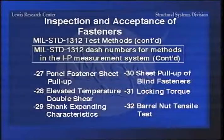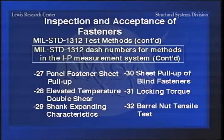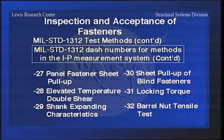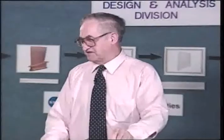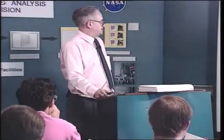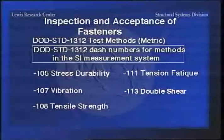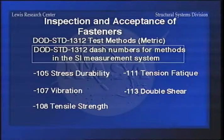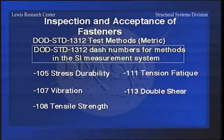That one would be for the blind fasteners. Then you have locking torque tests. The last one - barrel nut tension tests - I'm not sure whether the final copy is even in the book yet, but the last committee meeting we had it was discussed that that one was being published. Now for the metric side, you have these that are covered, and they changed it to a DOD standard 1312 for the metric in order to differentiate from the MIL standard. These are the ones that they have for testing of metric fasteners.